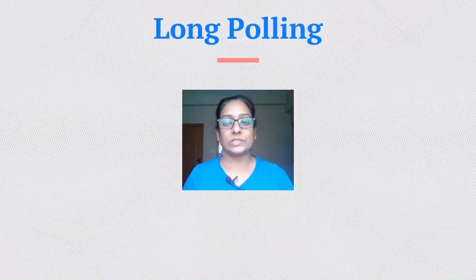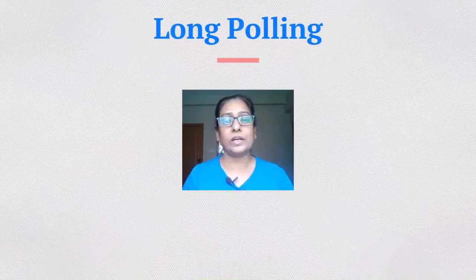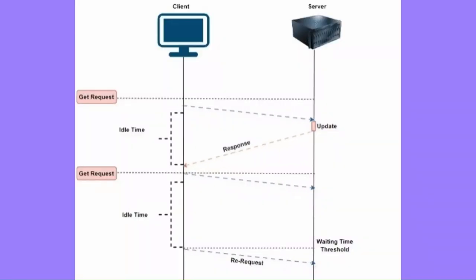Let's now discuss our second data polling technique: long polling. Long polling operates similar to short polling, but the client stays connected and waits for a response from the server until new updates are available or a timeout occurs. This approach minimizes idle time, but it introduces connection management challenges. Clients may need to reconnect multiple times after timeouts to get new data.